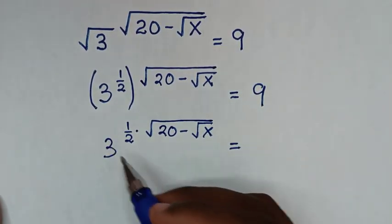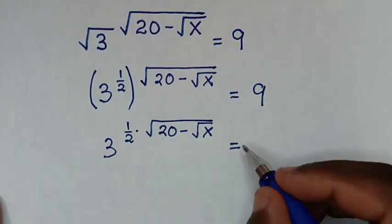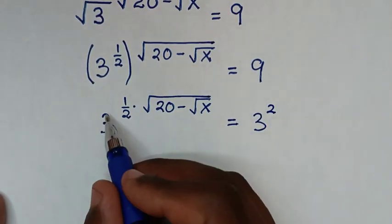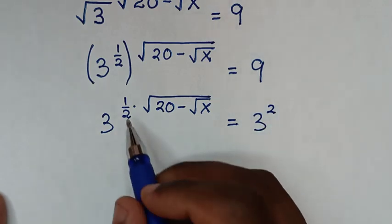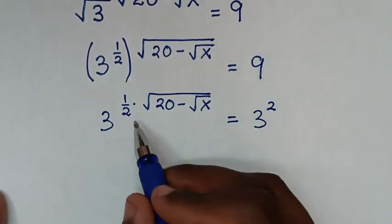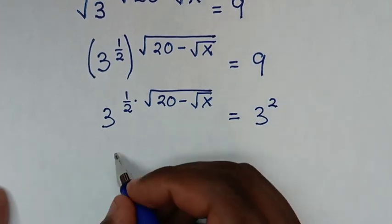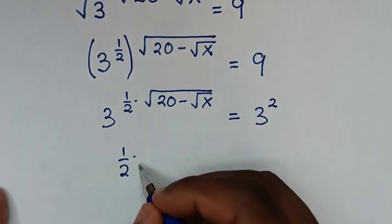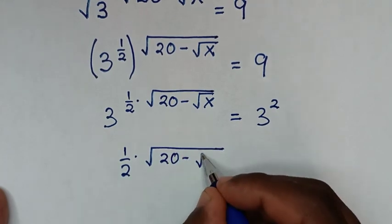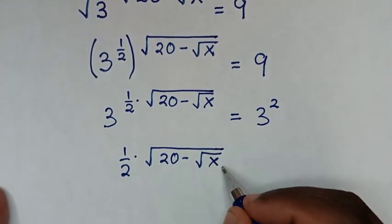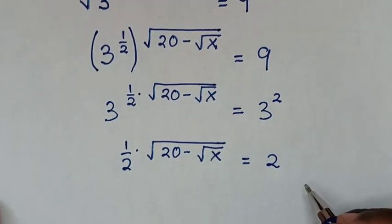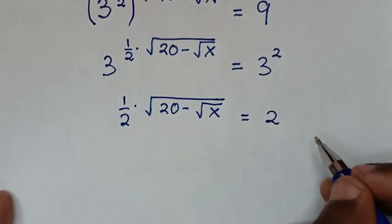Opening the bracket, it becomes 3 to the power of one half times (√20 minus √x), equal to 9. Since 9 is the same as 3 squared, we now have the same base of 3 on both sides, so we can compare the exponents. This gives us: one half times (√20 minus √x) equals 2.